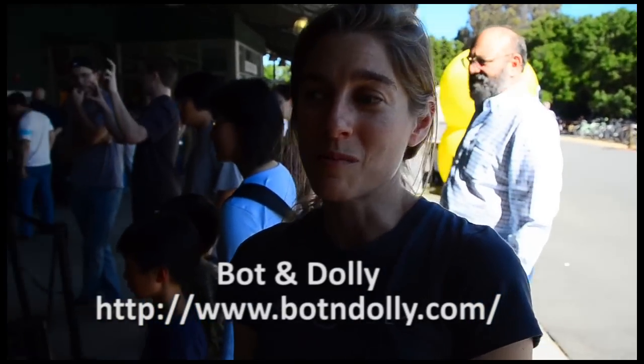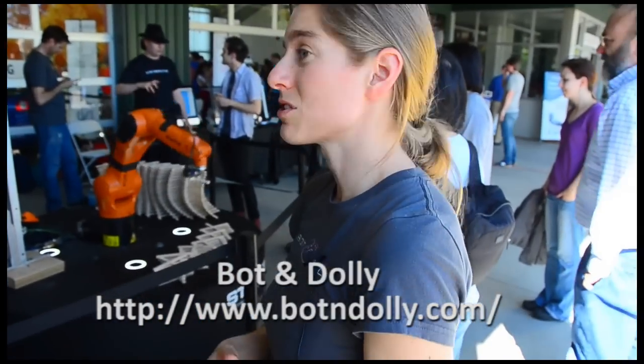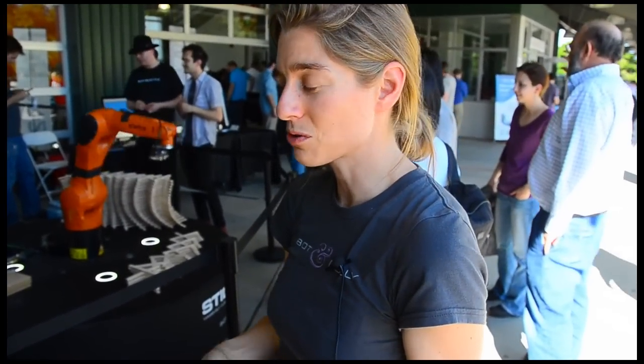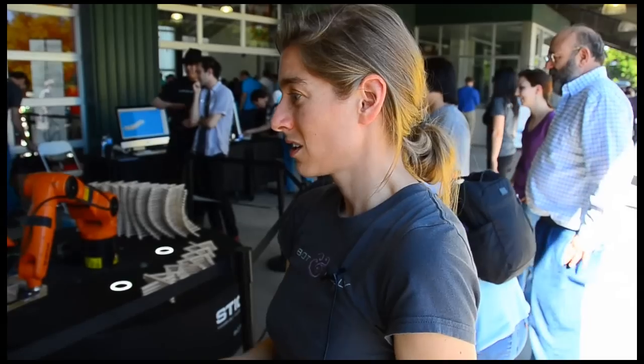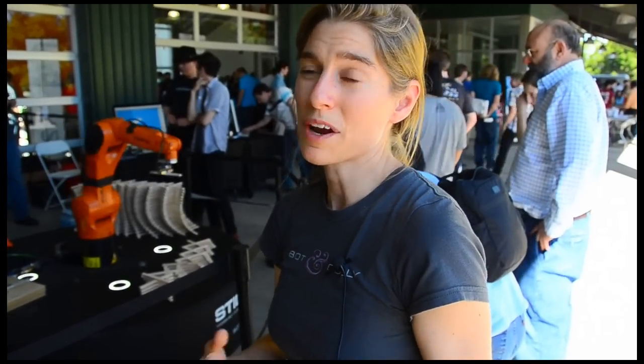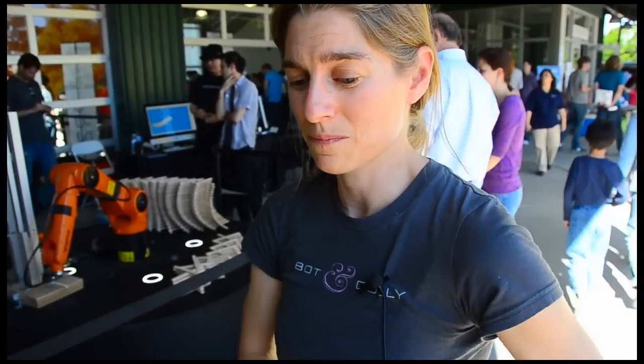Bot and Dolly is a San Francisco-based company. Our big idea is that we are co-opting industrial technologies for creative use. So a big part of that is redesigning the way that you would handle robotic motion programming and robotic motion control. So we got our big start in the entertainment world. We did some movies with Hollywood films with Warner Brothers.